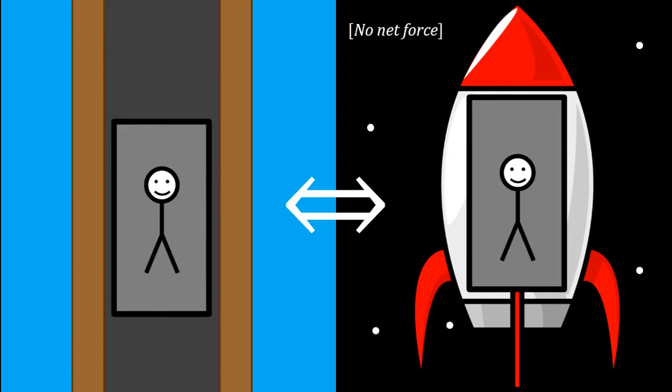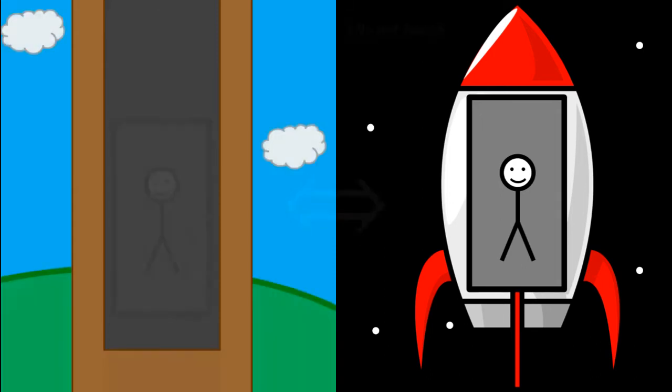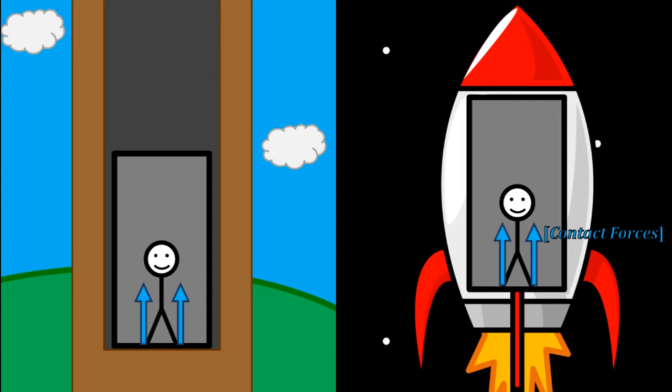Now the first lift hits the ground, and at the same time, the spaceship turns on its engines and accelerates upwards. Now both men fall to the floor of their lifts, and once again the lifts cannot be distinguished. This shows that the effects of acceleration can also be produced by gravity, and vice versa.